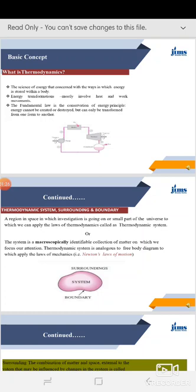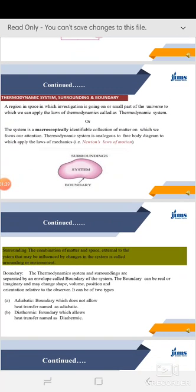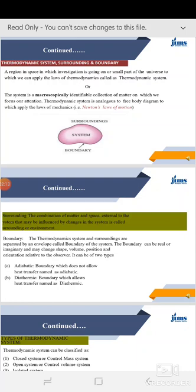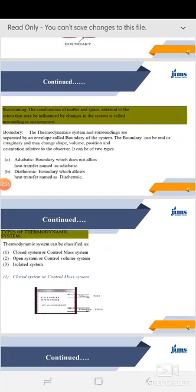A thermodynamic system is analogous to a free body diagram to which we apply the laws of mechanics like Newton's law of motion. In this diagram, we see the system, boundary, and surrounding — outside the boundary is the surrounding. Surrounding is the combination of matter and space external to the system that may be influenced by changes in the system. Boundary is the envelope separating the thermodynamic system and surrounding; it can be real or imaginary, and may change in shape, volume, position, and orientation. There are two types: adiabatic boundary, which does not allow heat transfer, and diathermic boundary, which allows heat transfer.